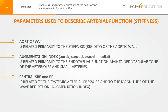The most frequently used parameters in the medical scientific literature for describing arterial function and arterial stiffness are the aortic pulse wave velocity, the augmentation index, and the central systolic blood pressure and central pulse pressure.